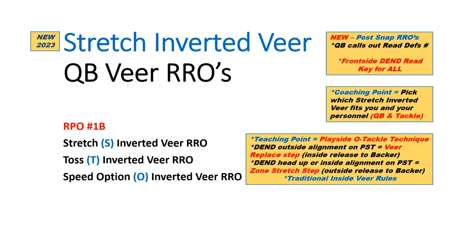Key coaching point: you want to pick which one of these three different variations fits you and your personnel best, specifically looking at quarterback and then tackles. What we're using here is a traditional inside veer rules for that play side tackle.